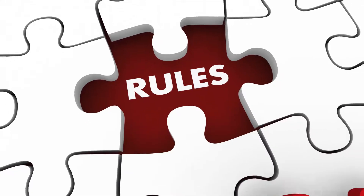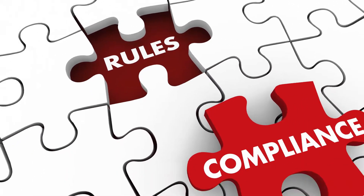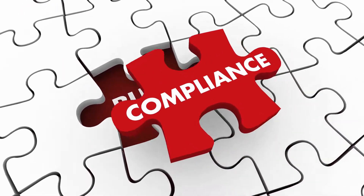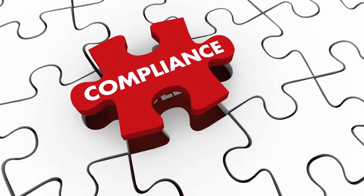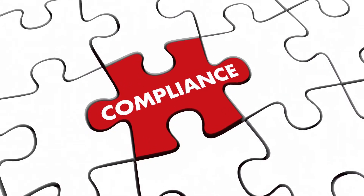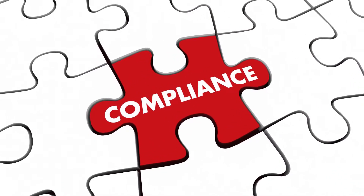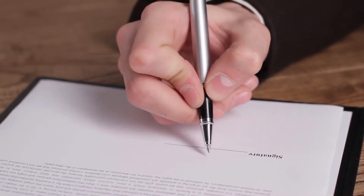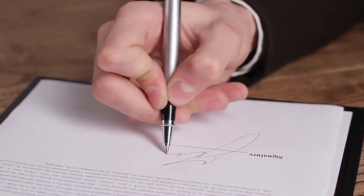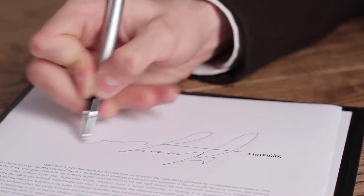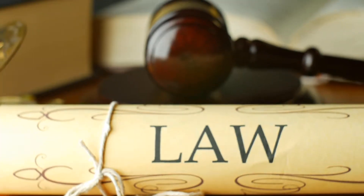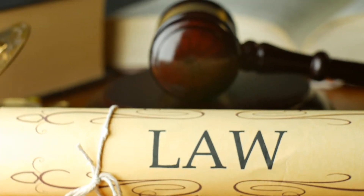What does falsity mean? Falsity is an incorrect statement that causes damage to another party, such as a claim of a clean medical history used to obtain health insurance while being aware of a pre-existing condition. The victim of the lie can file suit to recover damages, and in some cases the crime may also involve government agencies.